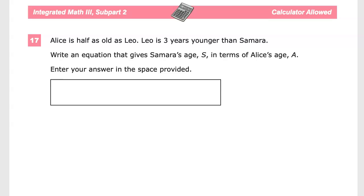Alice is half as old as Leo. Leo is three years younger than Samara. Write an equation that gives Samara's age, S, in terms of Alice's age, A. Enter your answer in the space provided.